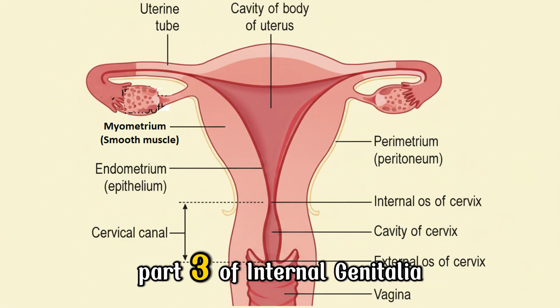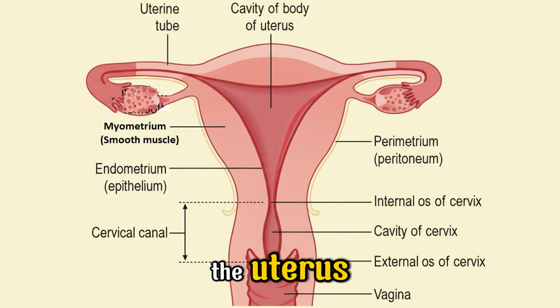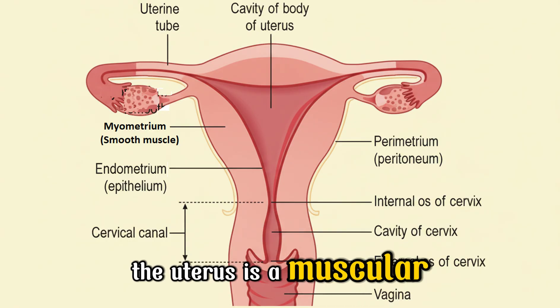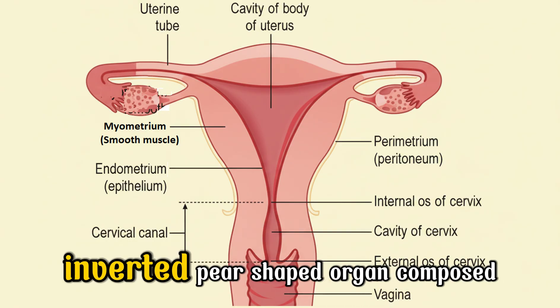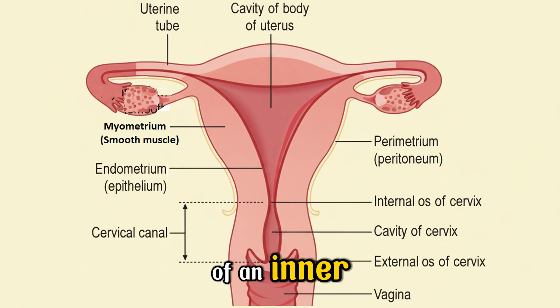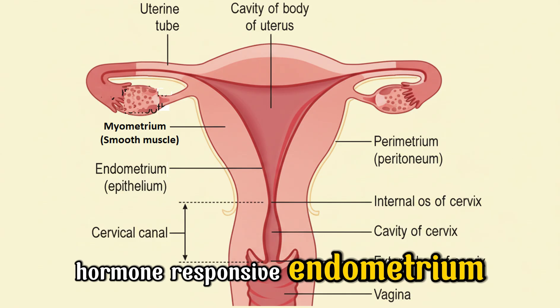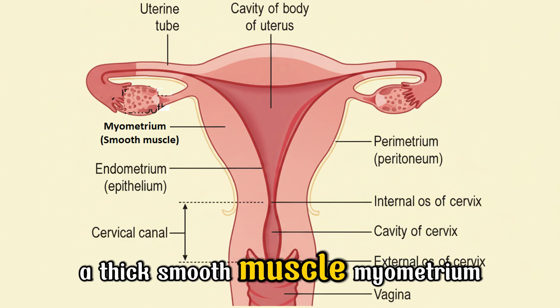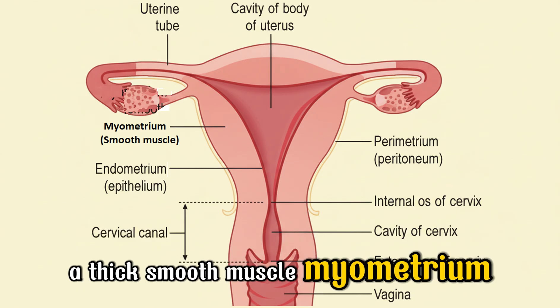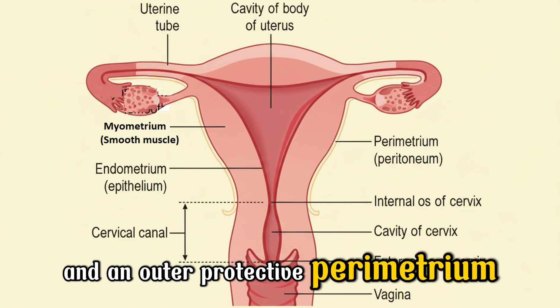Part 3 of internal genitalia: the uterus. The uterus is a muscular, inverted pear-shaped organ composed of an inner hormone-responsive endometrium, a thick smooth muscle myometrium, and an outer protective perimetrium.